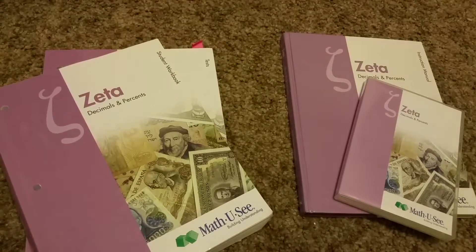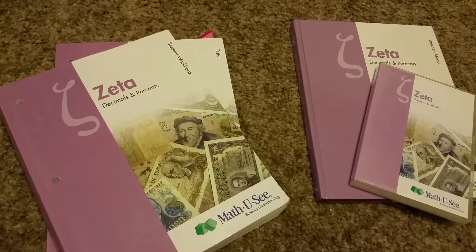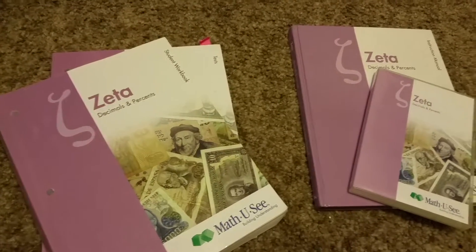Hi, this is Matthew C. Zeta. So this is next up in line. It goes primer, alpha, beta, gamma, delta, epsilon. This is zeta.